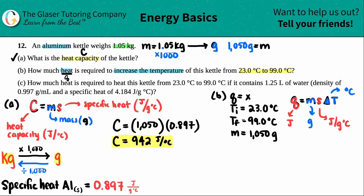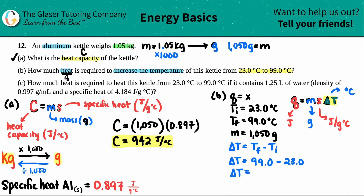The first thing I have to figure out is delta T, the change in temperature, which is always final minus initial. So delta T equals 99.0 degrees Celsius minus 23.0 degrees Celsius, giving a delta T of 76.0 degrees Celsius.